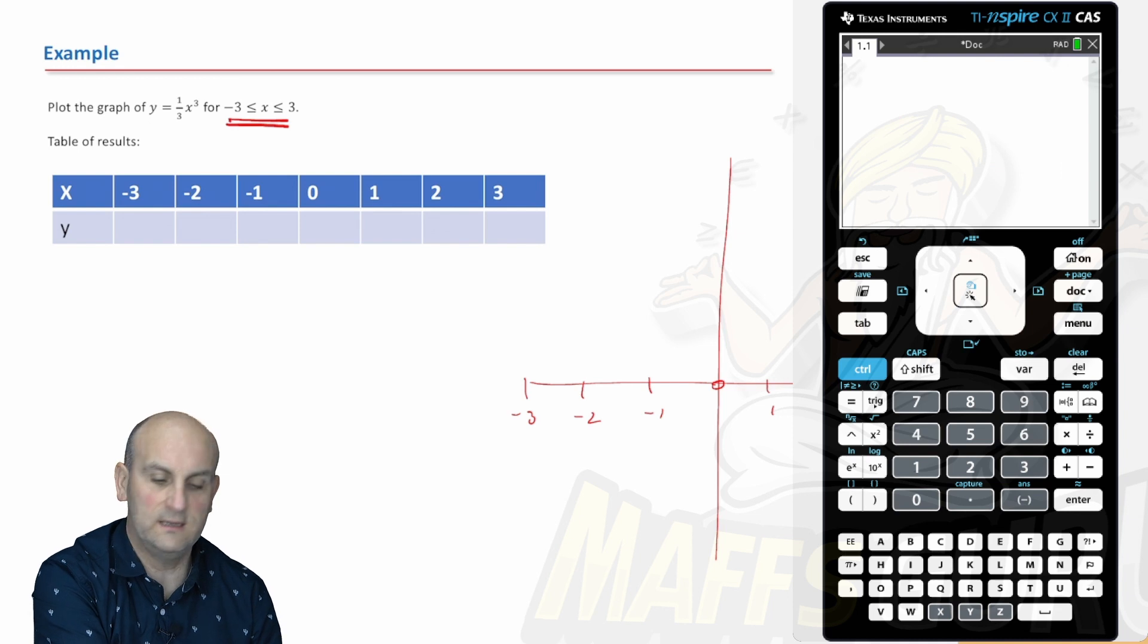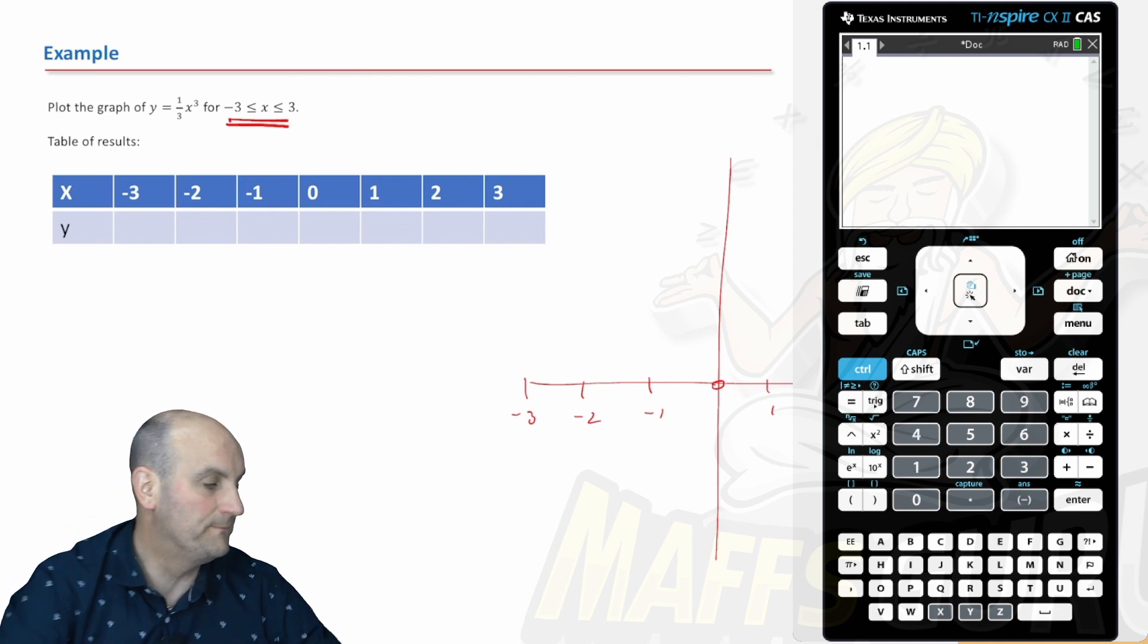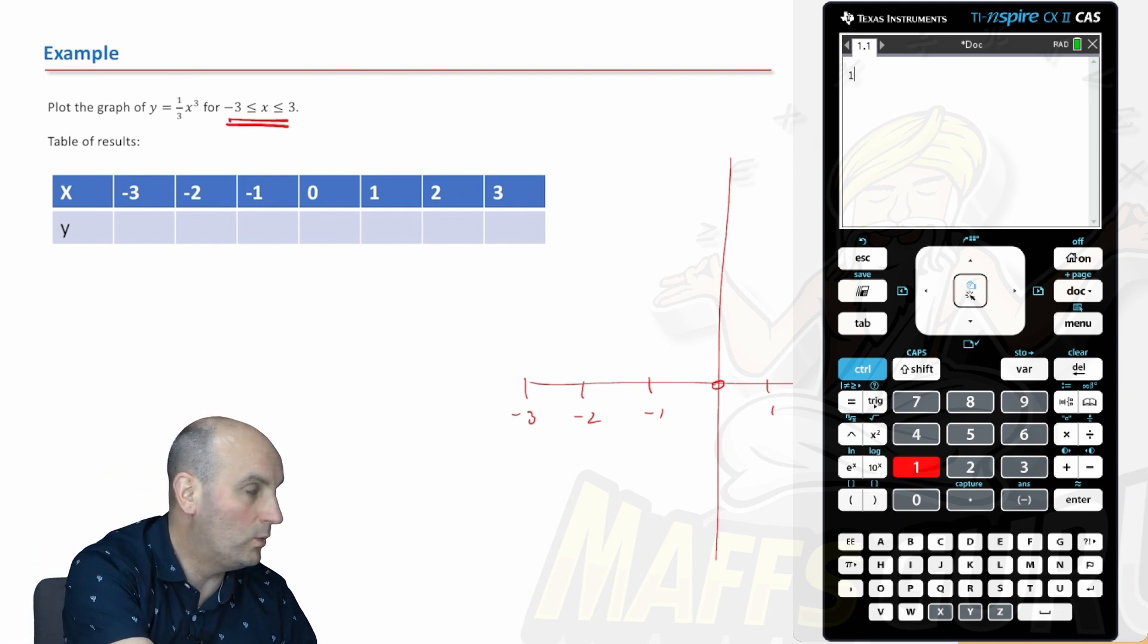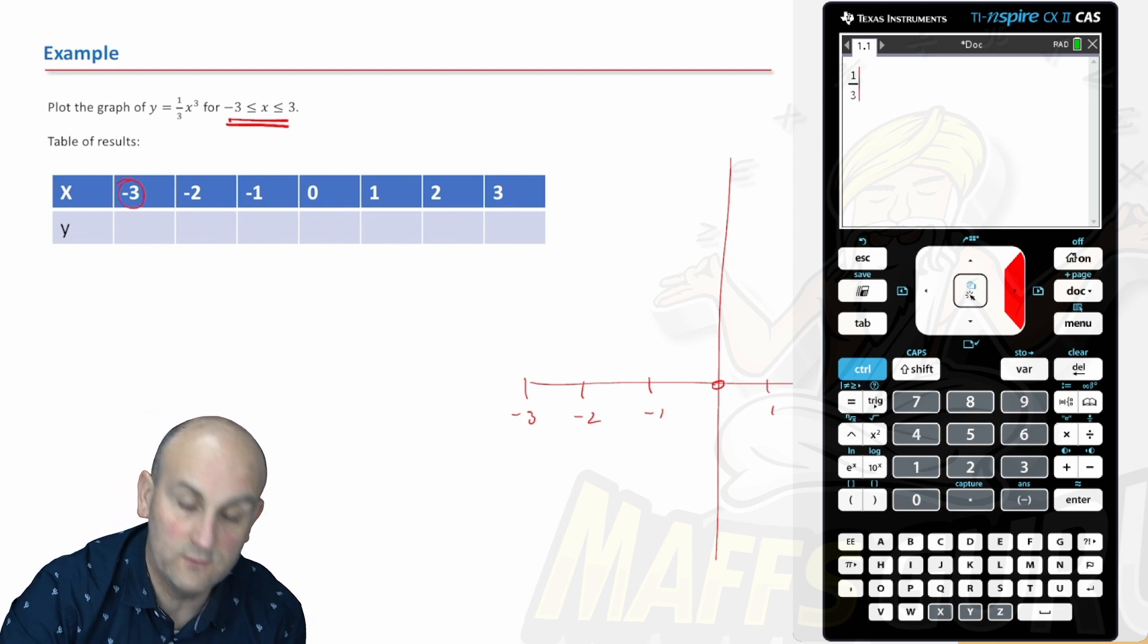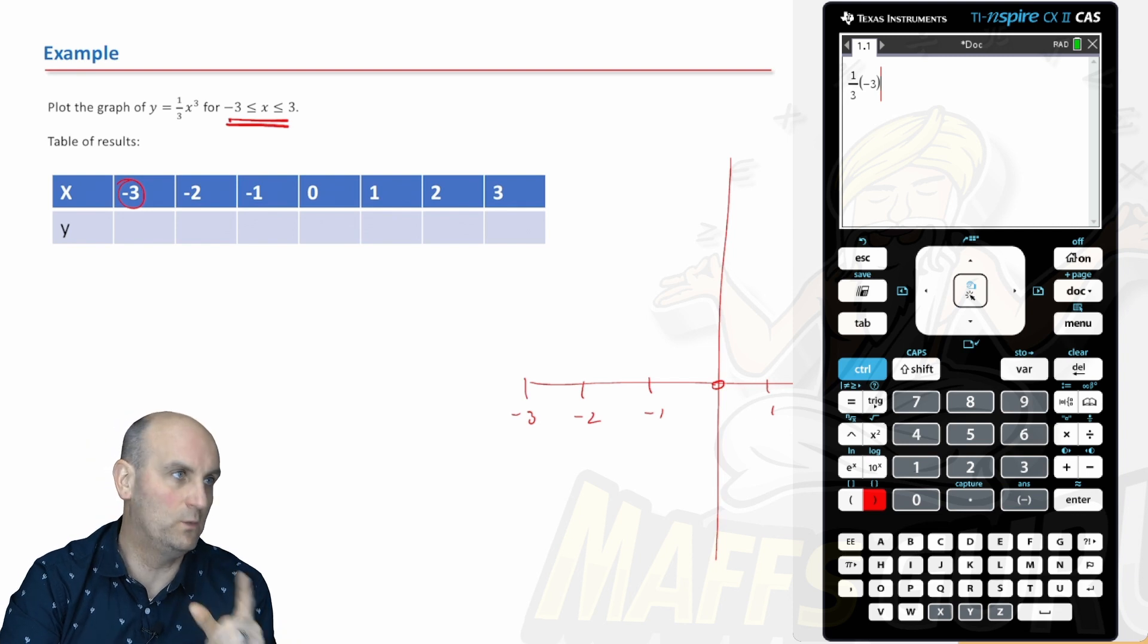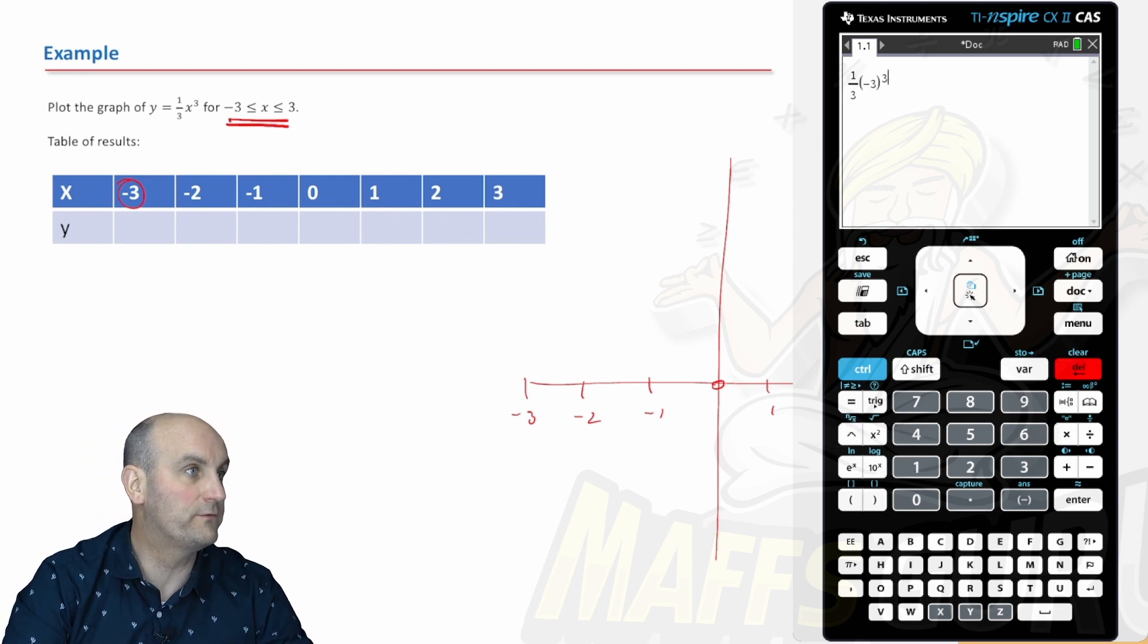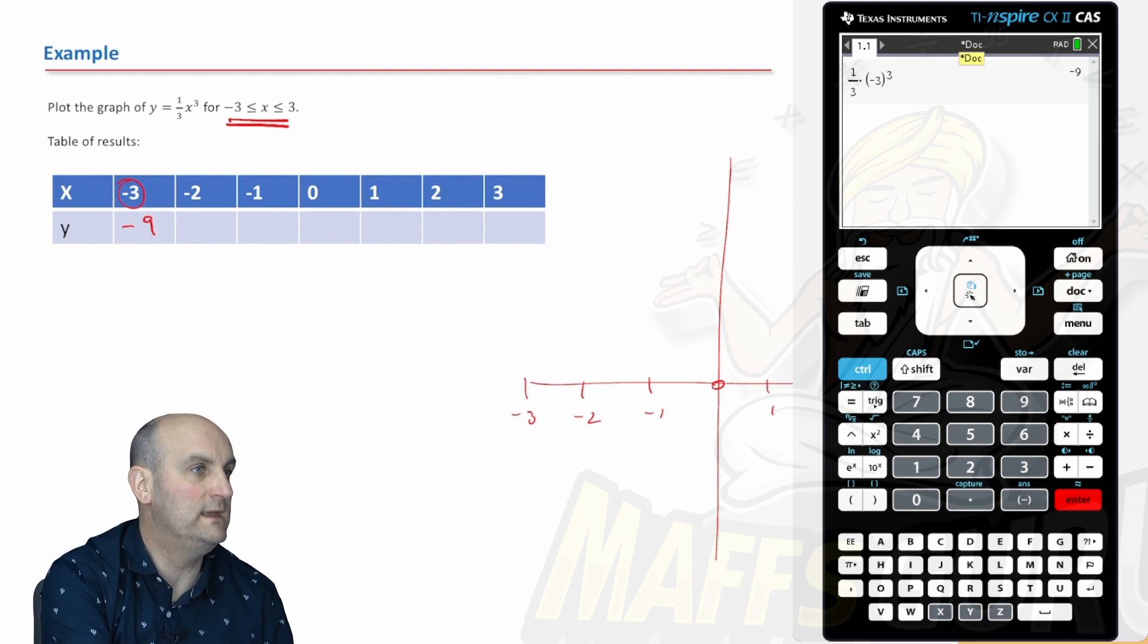My formula is basically y equals 1 third x cubed. I'm now going to work out my y values by doing 1 third of the value of x, which is going to be cubed. My first x value is minus 3. Because my calculator is stupid, I'm going to put the minus 3 in brackets or it's going to give me a wrong answer. Then I'm going to raise that to the power of 3. Hit enter and it gives me minus 9. So my first value there is minus 9.